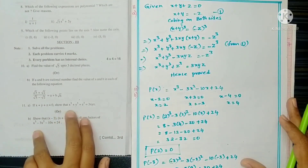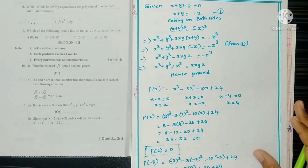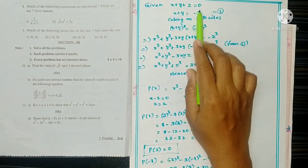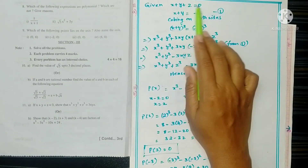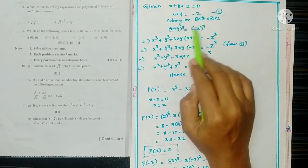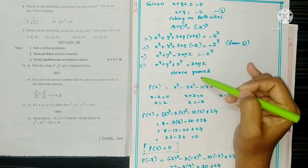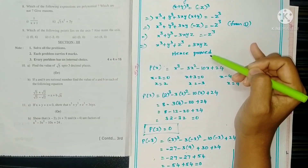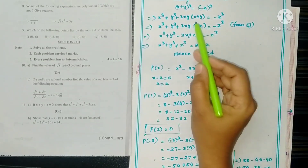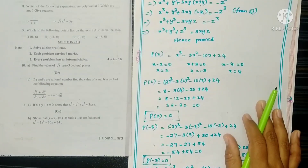Question 11a: If x + y + z = 0, show that x³ + y³ + z³ = 3xyz. Since x + y + z = 0, we have x + y = -z. Now cube both sides using the (x + y)³ formula and substitute (x + y) = -z to derive the result.